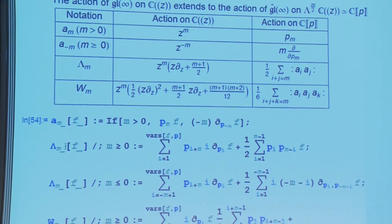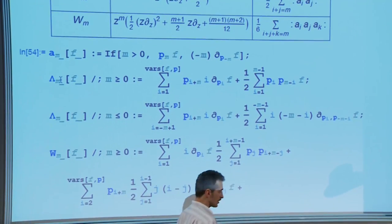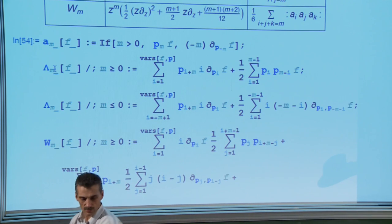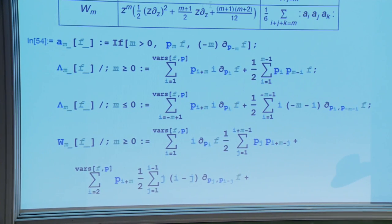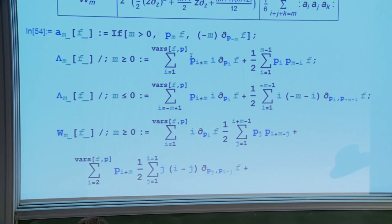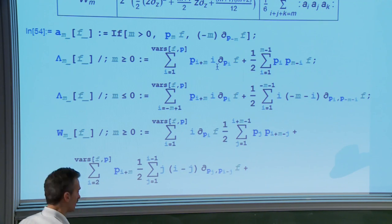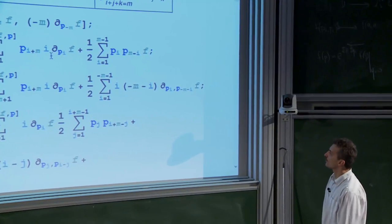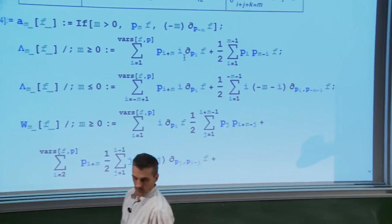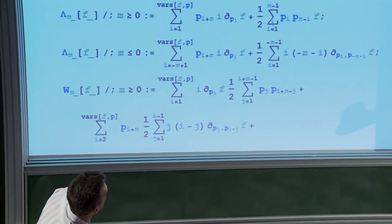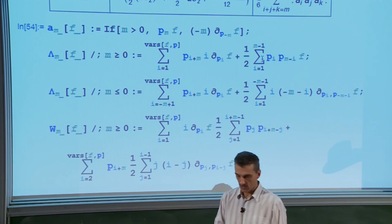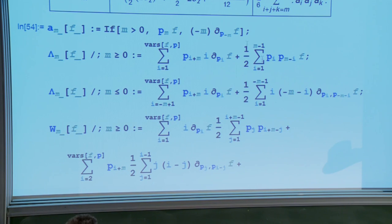This intermediate change of coordinates is an automorphism of the hierarchy, so the transformed function still satisfies the KP equations. Although the change involves negative powers of u and does not extend to u equal to 0, the resulting function is regular at u equal to 0, and at u equal to 0 it equals the Witten–Kontsevich potential up to rescaling of variables. This completes the argument.